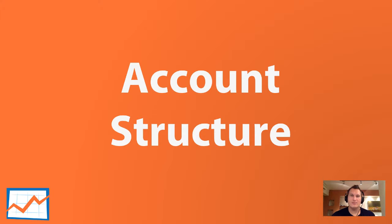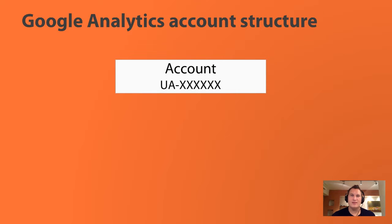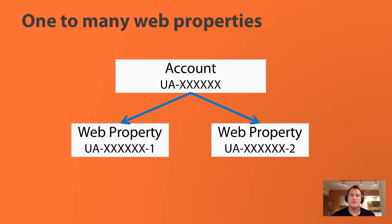Next thing I want to talk about is how do you structure your account. Within Google Analytics, you have an account and your account number is defined by a UA number — it's UA followed by a number. That's your Google Analytics account number, and basically anything that goes into that UA number is within your Google Analytics account. Within an account you're going to have web properties. You can have one web property or many — the limit for most of us is 50 web properties per account. Each web property you create gets something added to the end of your UA number: a dash one, a dash two, and so on. These are Google's way of differentiating between each web property, and that's where you send your data to in Google Analytics.